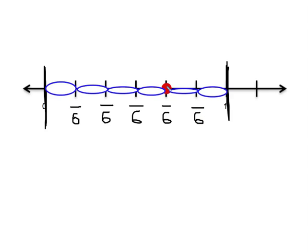The one I really care about is this line right here, because this is the line that's marked. So when I get to here, I will have gone through 1, 2, 3, 4 out of 6 pieces. So this fraction right here is worth 4/6.